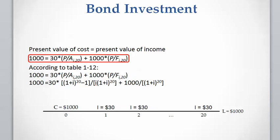We write the equation: present value of cost equals present value of income. Present value of the cost is $1,000 that we pay for this investment at the present time. And we are going to receive 20 payments of $30, and at the end of the 10th year — which is the 20th period — we are going to receive the face value of $1,000.